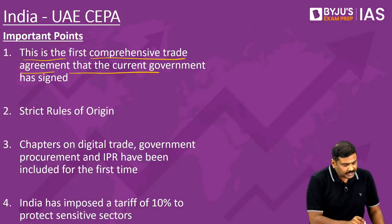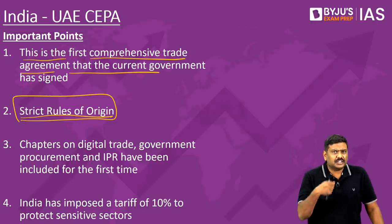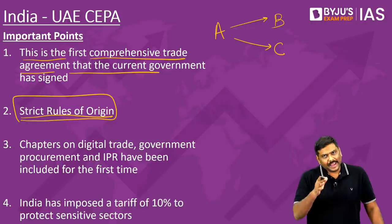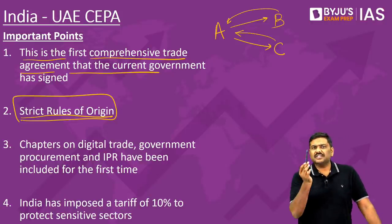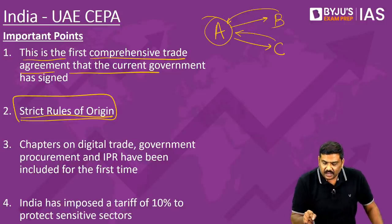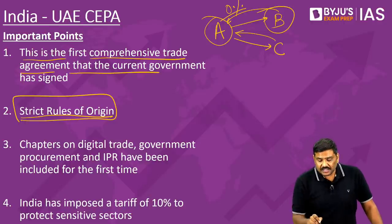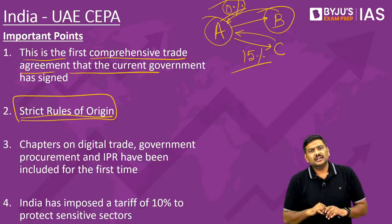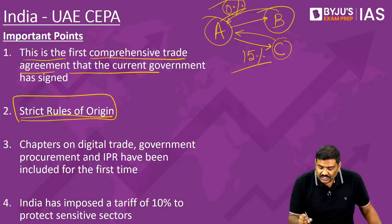Why does this agreement make a lot of sense for India? This is the first comprehensive trade agreement that the current government of India has signed in the last 6 to 7 years — very important. Second point: strict rules of origin will be applicable in this particular agreement.